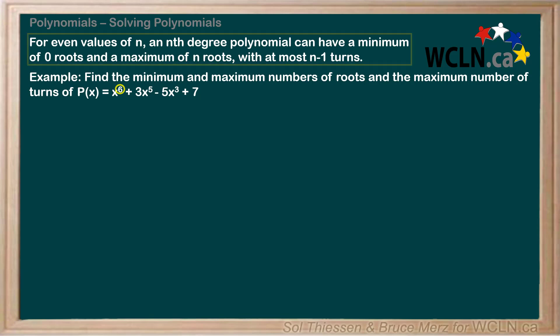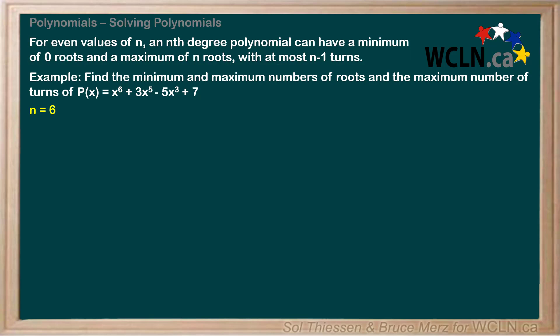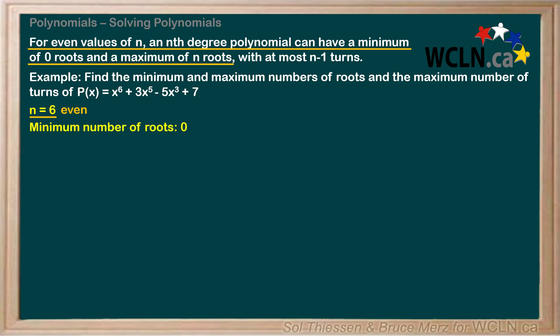So as we apply our conclusion from the last slide, our n is 6. We know that for even values of n, an nth degree polynomial can have a minimum of zero roots and a maximum of n roots. Since in this example n is 6, an even number, the minimum number of roots is 0 and the maximum number of roots is 6.